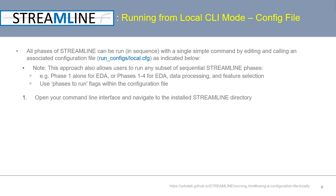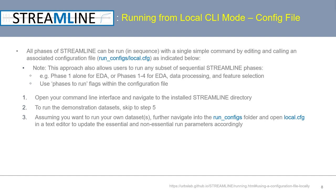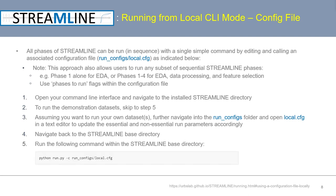Walking through the steps to run Streamline, begin by opening your command line interface and navigating to the installed Streamline directory. If you want to run the Streamline demonstration on the included demonstration datasets, you can immediately skip to step 5 since the configuration file is set up to run this automatically. Otherwise, assuming you want to run your own datasets, navigate into the run_configs folder and open the configuration file named local.cfg using a text editor. Next, update the essential and non-essential run parameters accordingly, then navigate back to the Streamline base directory and run the command within that directory.